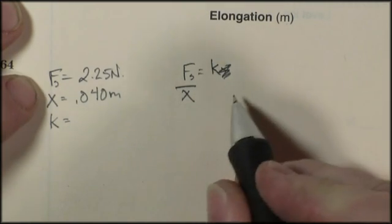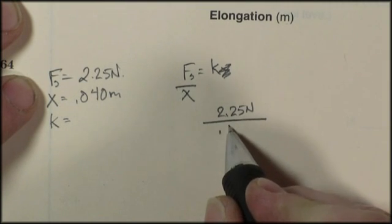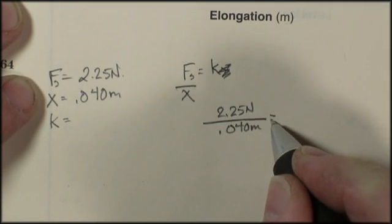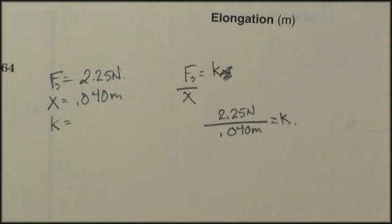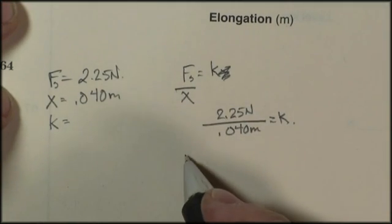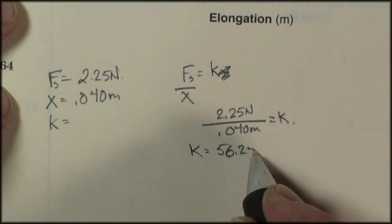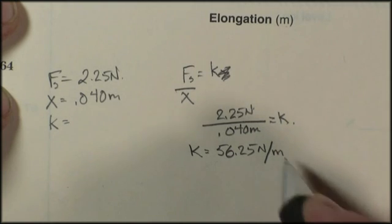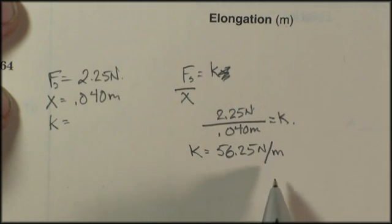So I can substitute in 2.25 newtons divided by 0.040 meters is going to be equal to k. Now I get the calculator, and I get an answer for k equal to about 56.25 newtons per meter. Dimensional analysis ensures that you get the proper units. So there's the spring constant.